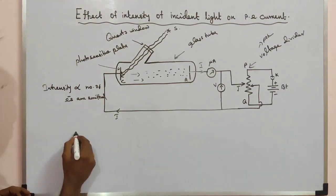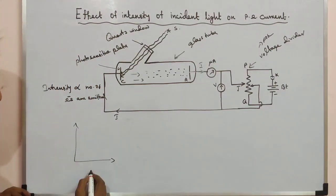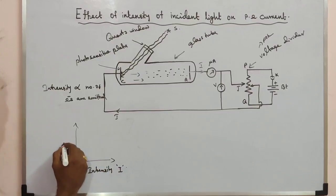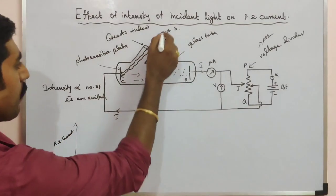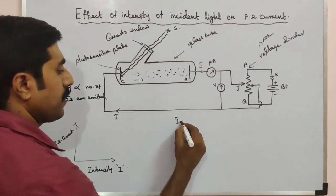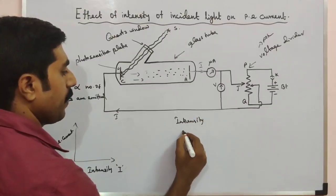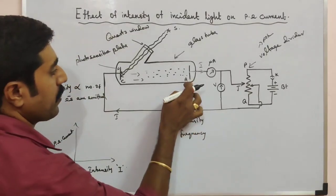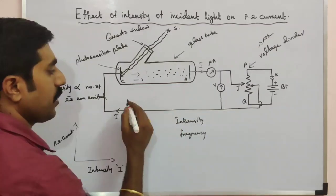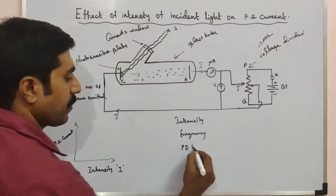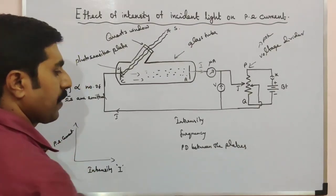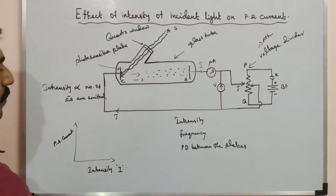Let us draw a graph: the x-axis is the intensity of incident radiation, denoted by I, and the y-axis is the photoelectric current. We need to keep the frequency of incident radiation constant, and also maintain a constant potential difference between the photosensitive plates.